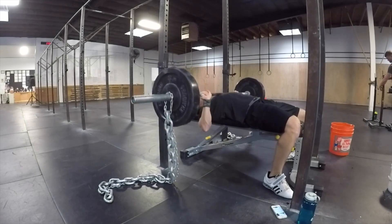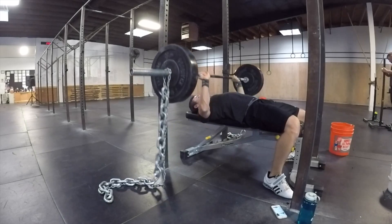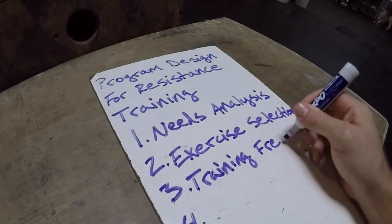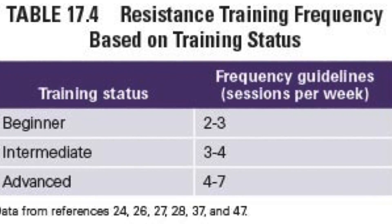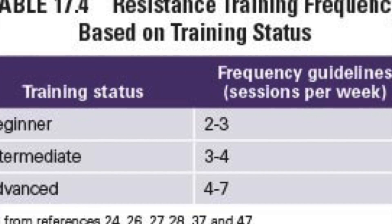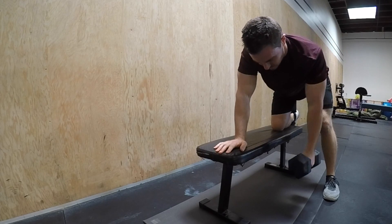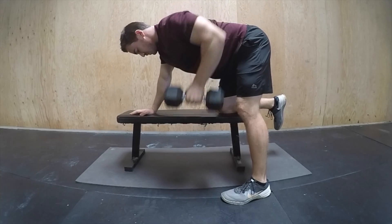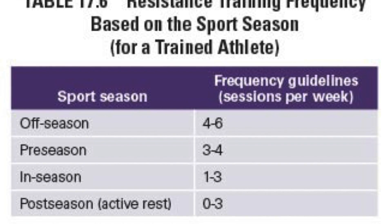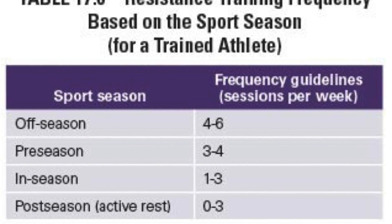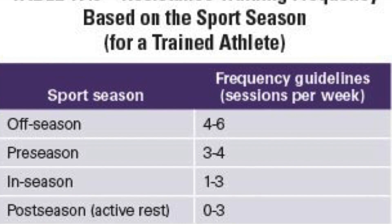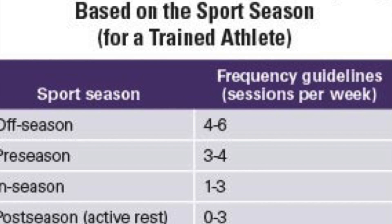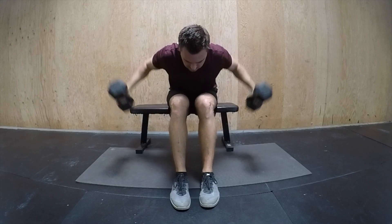Step three is training frequency — how many days a week they're going to train. A beginner will go about two to three days a week, intermediate three to four days a week, and advanced about four to seven days a week. Depending on the season: off-season four to six days, pre-season three to four, in-season one to three, and post-season or active rest about zero to three days.